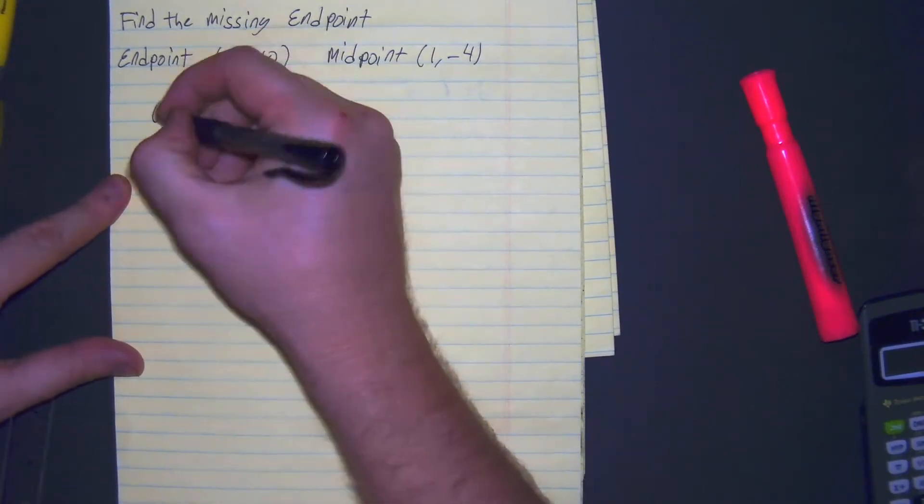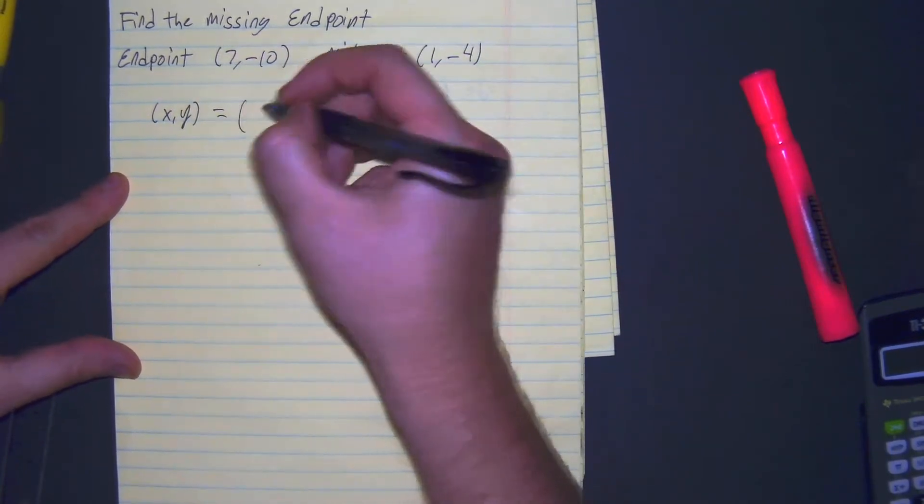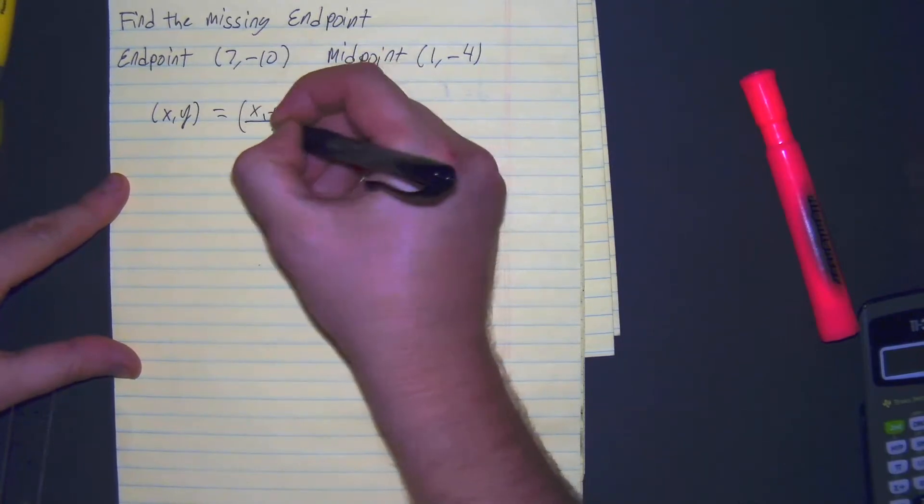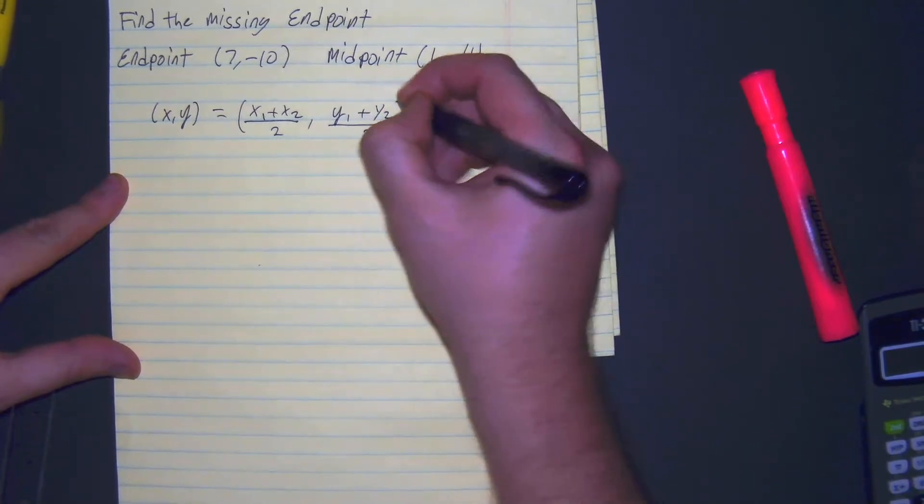If we can recall, our midpoint formula is (x, y). The midpoint is equal to the two endpoints averaged up: x1 plus x2 divided by 2, comma y1 plus y2 divided by 2.